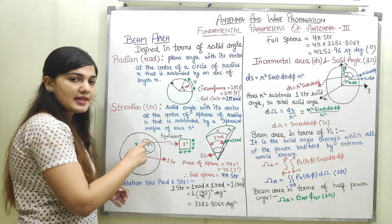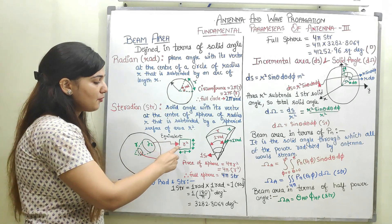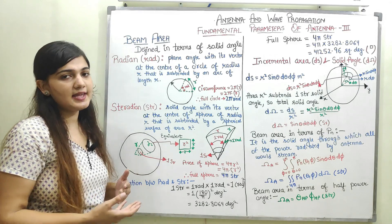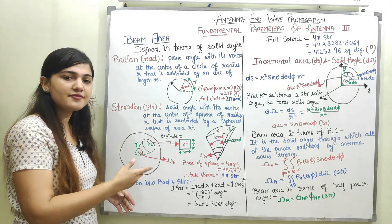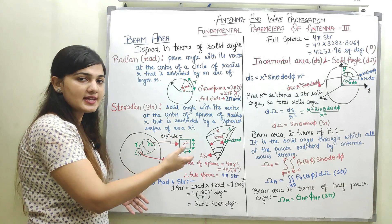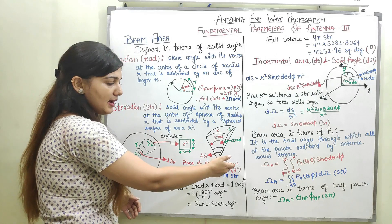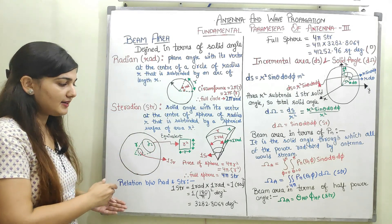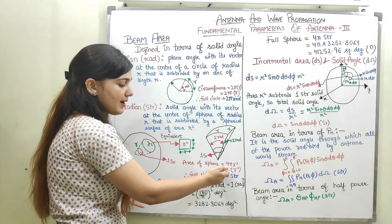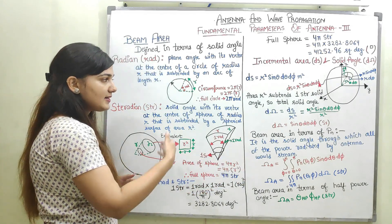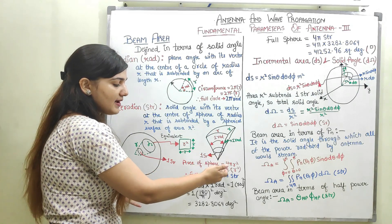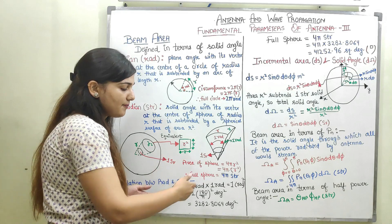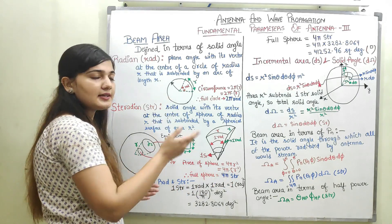We can visualize this area r² as a square with both sides equal to r, giving area r². The total surface area of a sphere is 4πr², which can be represented as 4π sections of r² area. Since each r² area subtends one steradian, the full sphere contains 4π steradians.